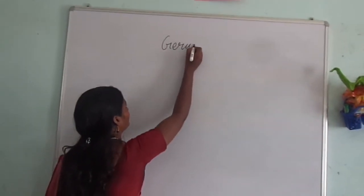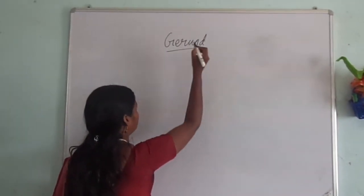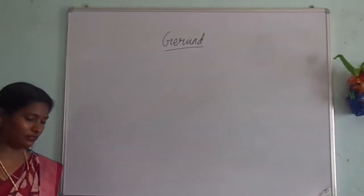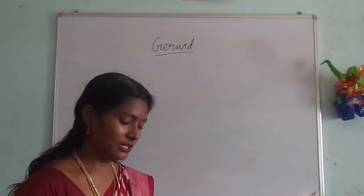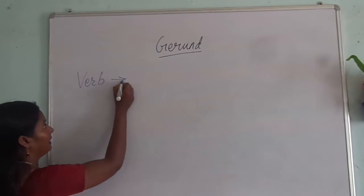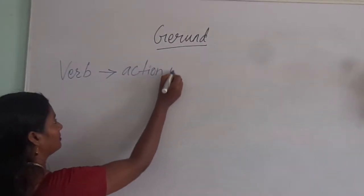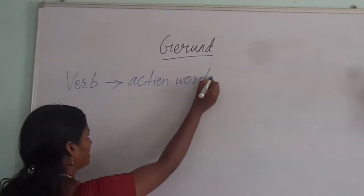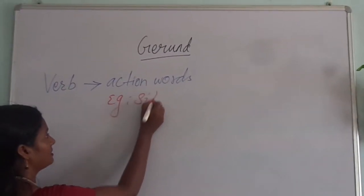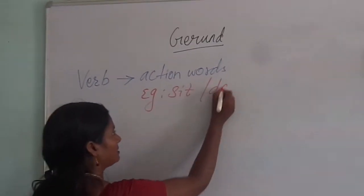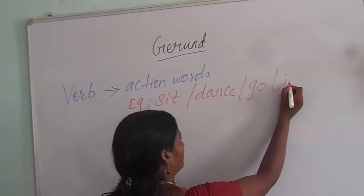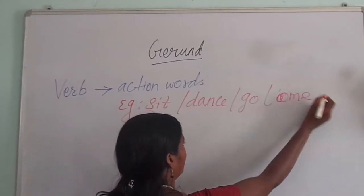Gerunds. For the gerund, we actually need the verb — action words. Examples: sit, dance, go, come, et cetera.